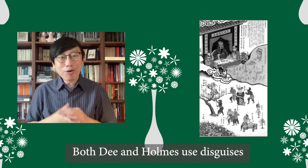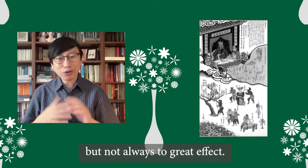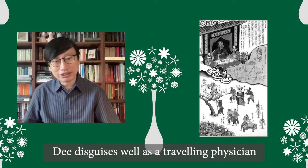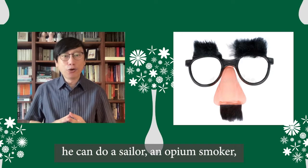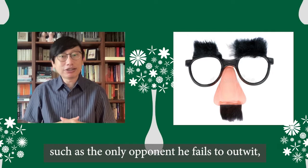Both Dee and Holmes use disguises, but not always to great effect. Dee disguises well as a travelling physician, but less so as a silk merchant. Holmes is a master of several disguises — he can do a sailor, an opium smoker, an old book collector, or even an old woman. But all his skills cannot fool a trained performer, such as the only opponent he fails to outwit: Irene Adler.